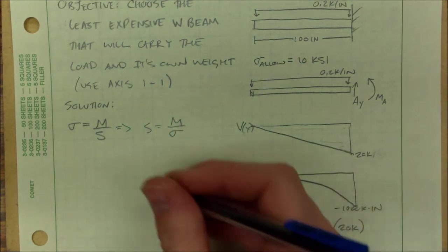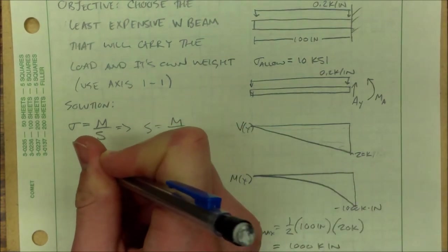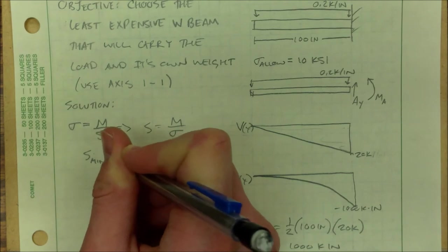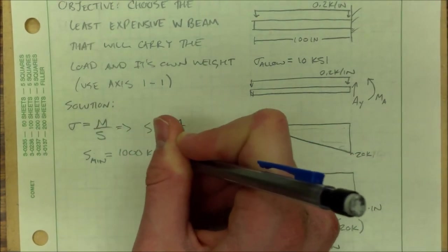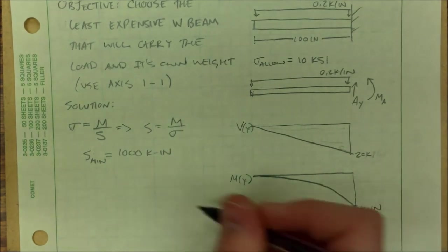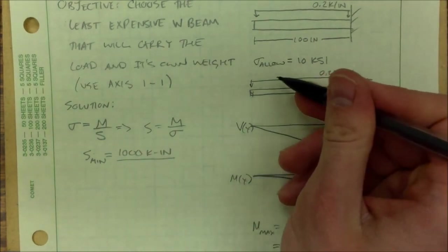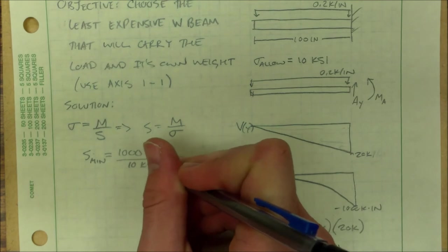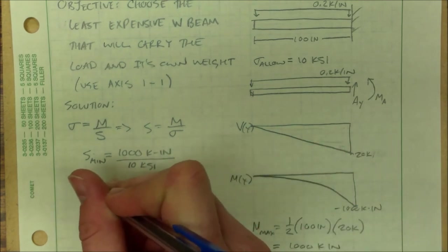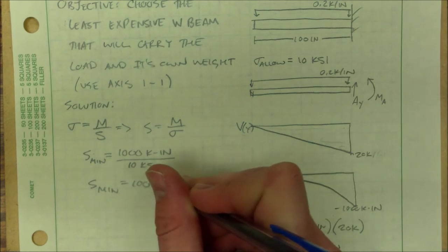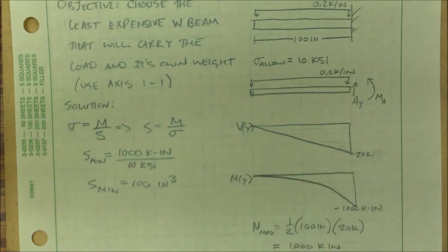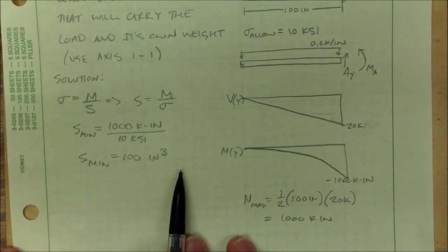Now I can plug in my numbers. S min is 1,000 kip inches. And our sigma allow is 10 ksi. So our S min is 100 inches cubed.